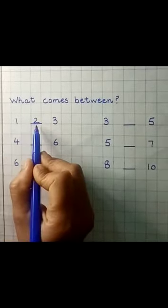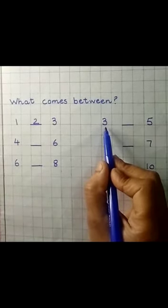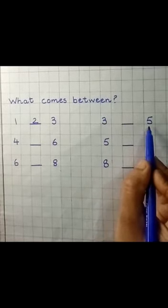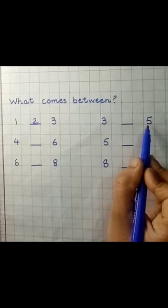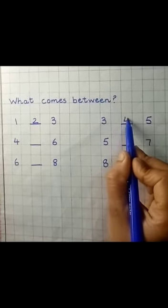So read it: one, two, three. The next number is three dash five. Which number comes between three and five? Here you have to write four.